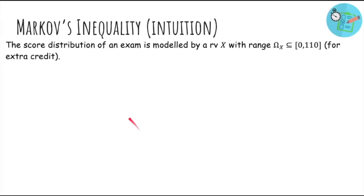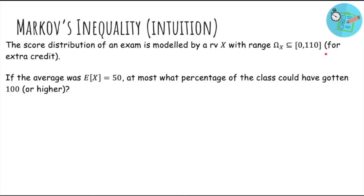Suppose the score distribution of an exam is modeled by a random variable with range from 0 to 110 for extra credit. So if the average was 50, at most what percentage of the class could have gotten 100 or higher? Well, it's one half, because if more than half the class got 100, then the average would already be greater than 50, which is impossible even if everyone else got zeros. So what we did was we took the average and divided by 100, and that's an upper bound on the probability that x is at least 100.